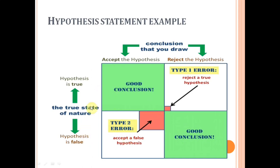In the second scenario, the null hypothesis is false — meaning there is actually a difference between the groups. If we reject the false null hypothesis, that is a good conclusion. But if we accept a false null hypothesis — null hypothesis is false means there is a difference, so we should reject it, but instead we are accepting it and saying there is no difference — that is the second type of error. Either rejecting a true null hypothesis or accepting a false null hypothesis are the two things that can happen.